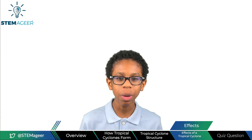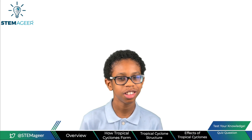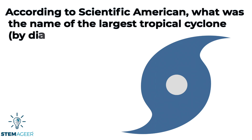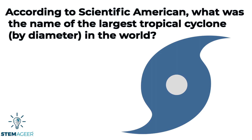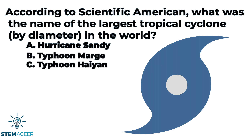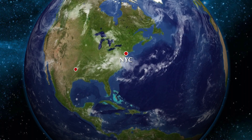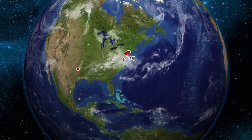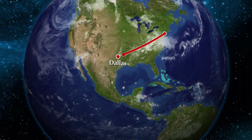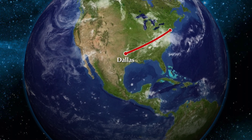Now you know all about tropical cyclones — let's test your knowledge with a quiz question. According to Scientific American, what was the name of the largest tropical cyclone by diameter in the world? Was it A. Hurricane Sandy, B. Typhoon Marge, C. Typhoon Haiyan, or D. Typhoon Tip? If you guessed D, Typhoon Tip, you are correct! The diameter of the storm was over 1,300 miles, or 2,200 kilometers — roughly the distance from New York City, New York to Dallas, Texas. Wow, that's a huge storm!